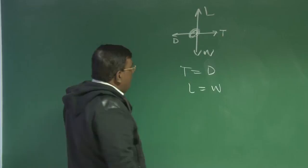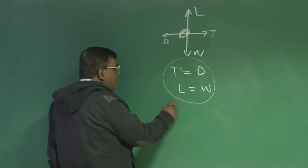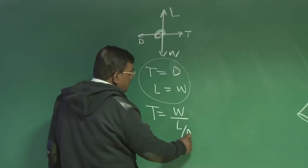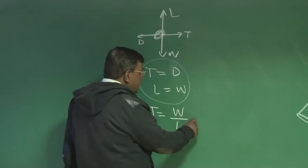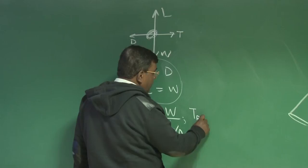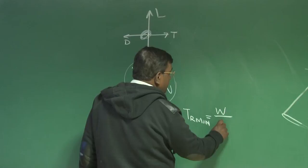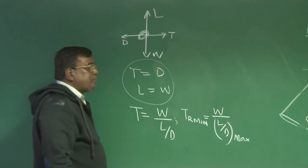But once I write like this, what happens? I get more information. The thrust will be equal to, I can use this equation. I can get thrust equal to weight by L by D. That is, weight by lift to drag ratio. That is, if I am a designer of an airplane, I should always want thrust required should be minimum, which means for a given weight L by D, lift to drag ratio should be maximum. Simple?